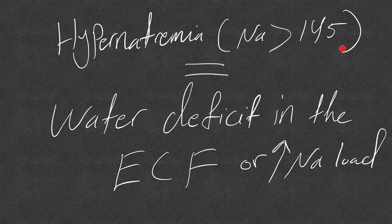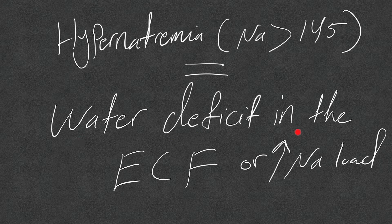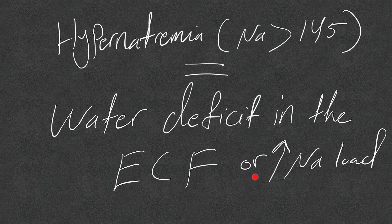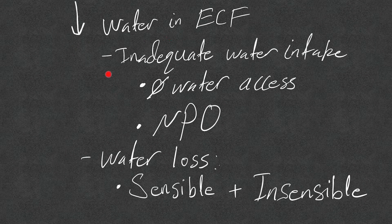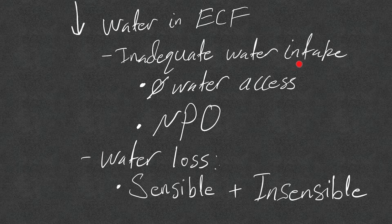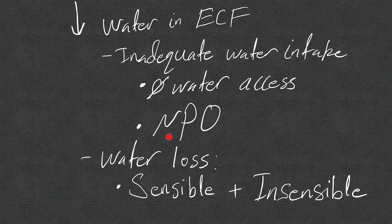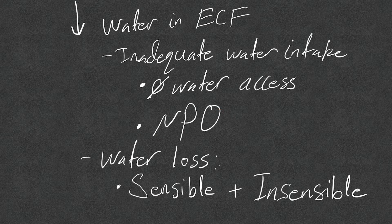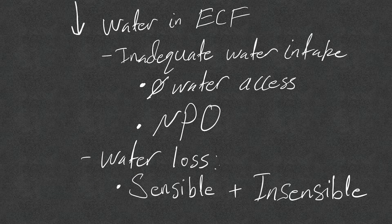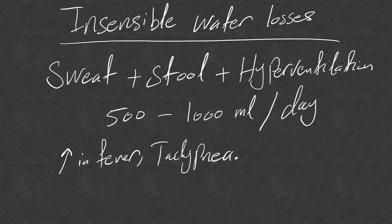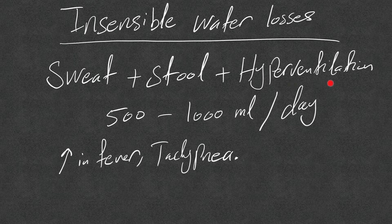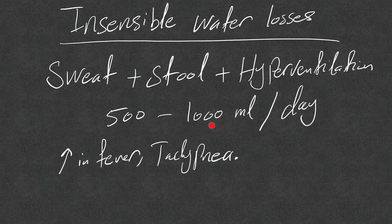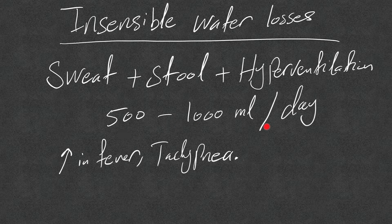Hypernatremia, which is sodium more than 145 millimoles per liter, means water deficits in the extracellular fluid. ECF is commonly increased in sodium or decreased water. ECF can happen because of inadequate water intake: either there is no water access, or the patient is NPO and cannot drink water for one reason or another, or water loss. Water losses can be sensible or insensible. Insensible water losses are water losses that happen with sweat, stool, and hyperventilation.